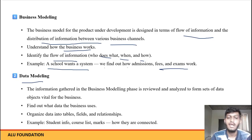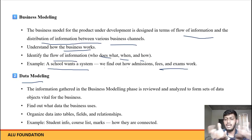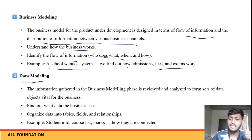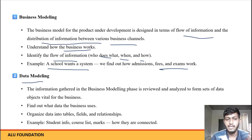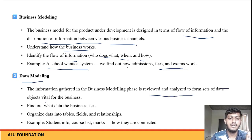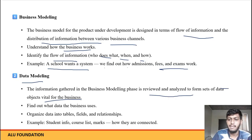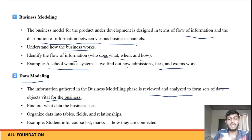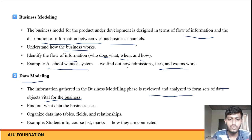Second one is data modeling. Data modeling mein kya hota hai? Data object ko — us mein saari information hoti hai. The information gathered in the business modeling is reviewed and analyzed to form a set of data objects which are needed for the business. Jo bhi humay information gather ki hai business modeling mein, usko analyze karenge, review karenge, aur data objects tayaar karenge. Woh data objects aage ke phases mein use honge.